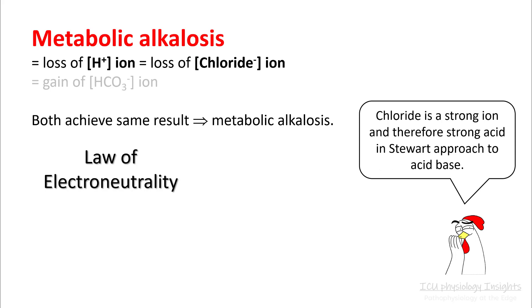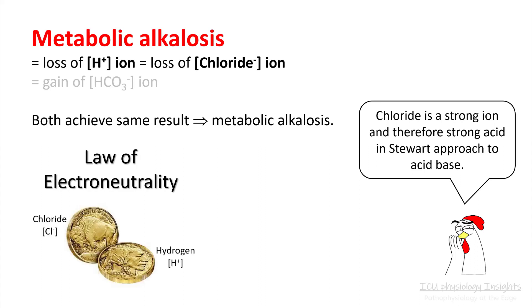In Stewart's acid-base framework, chloride is a strong ion, therefore it's a very strong acid, so whenever you lose chloride you become more alkalotic. This also makes sense because of the law of electroneutrality — if you lose a chloride you have to lose a positive ion, that is your hydrogen ion. So think about hydrogen and chloride as two sides of a coin.